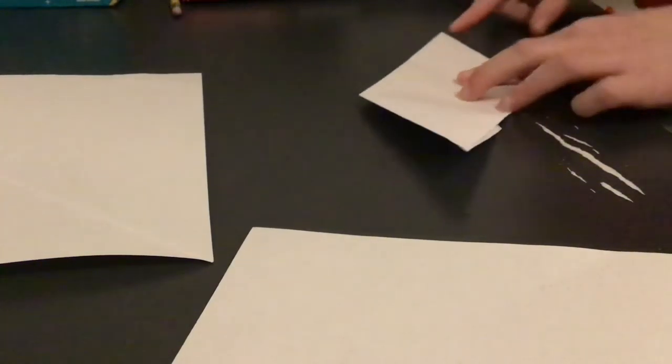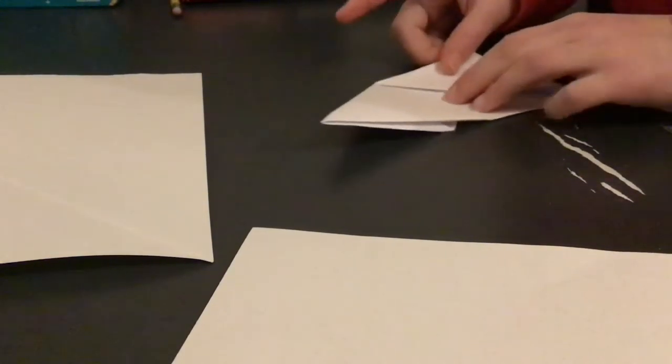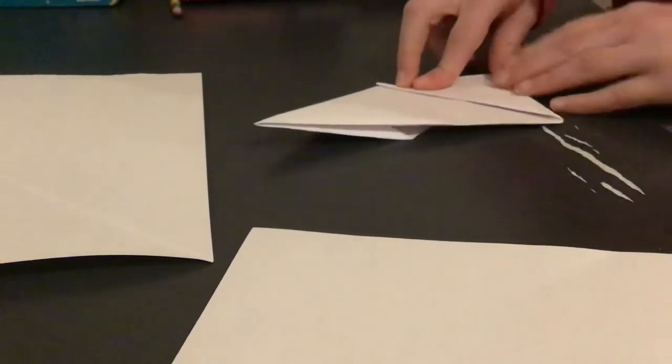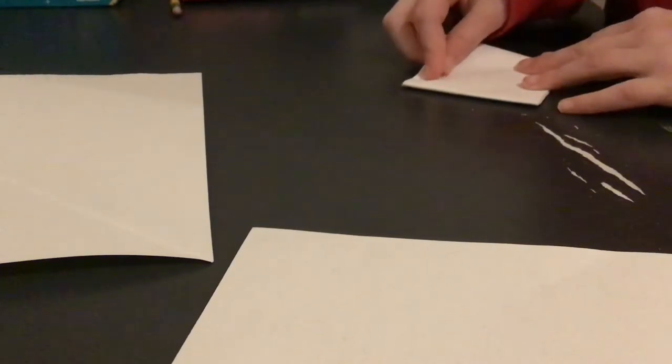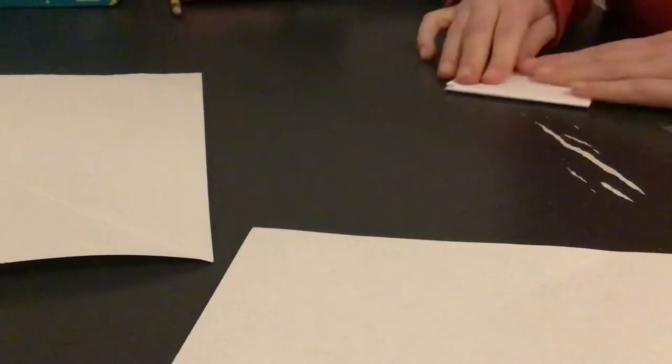Now, turn over. And fold the pointy corners, the acute corners, to the non-acute corners, making a square. The one it's next to and diagonal to, adjacent to. And now, you're gonna make a mountain fold between them. And that's our first piece.